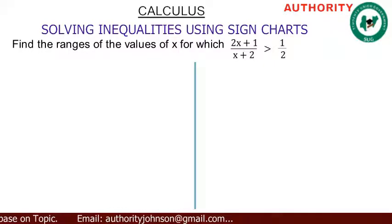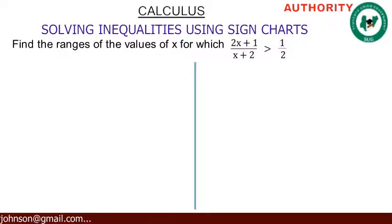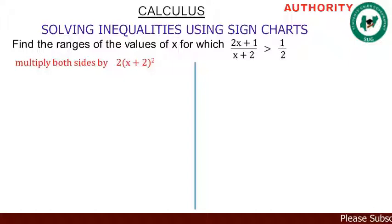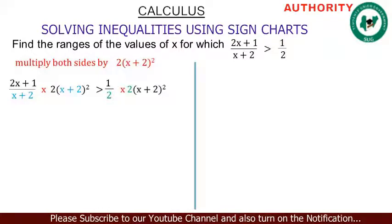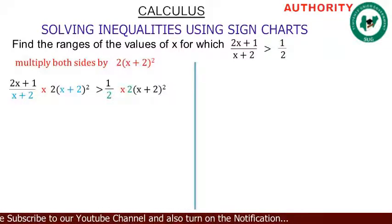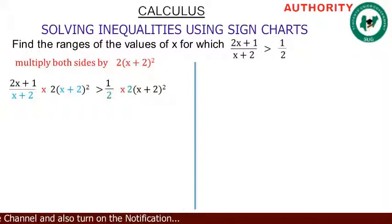Take (x + 2) squared and multiply it to both sides. That is, carry 2 and then (x + 2) squared, multiplied to both sides. So we have (2x + 1) / (x + 2) multiplied by 2(x + 2)² on the left side, greater than (1/2) multiplied by 2(x + 2)² on the right side.